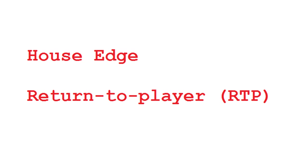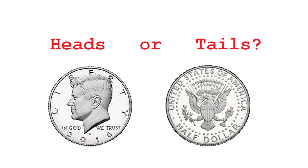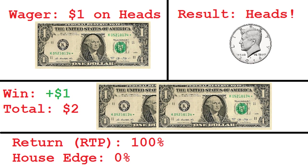I'm going to explain how the RTP is calculated for games of chance, starting with a simple coin flipping game. You make a wager and then select which side of the coin will be displayed after I flip it — heads or tails. If you are correct, you win even money, or $1 for each $1 wagered. This is a statistically fair game, with an RTP of 100%, or a 0% house edge. You will neither win nor lose in the long run.